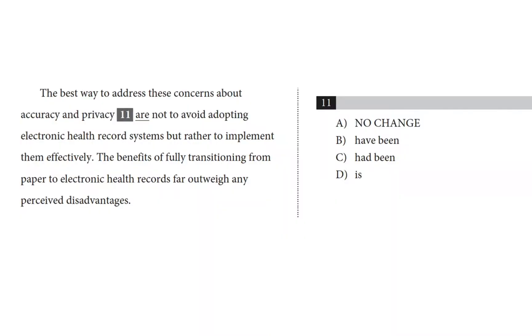We're taking a look at question 11 here, which is from a passage about electronic medical records. The best way to address these concerns about accuracy and privacy are not to avoid adopting electronic health record systems, but rather to implement them effectively.